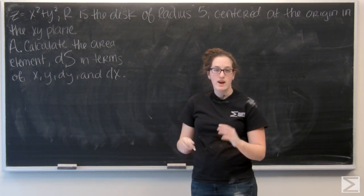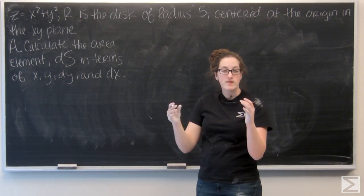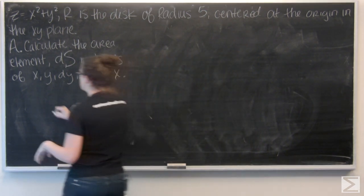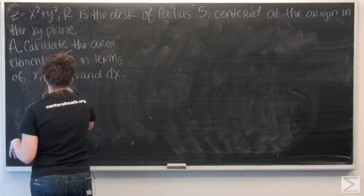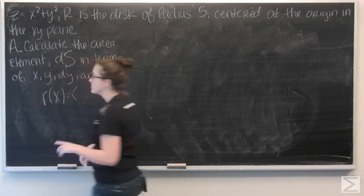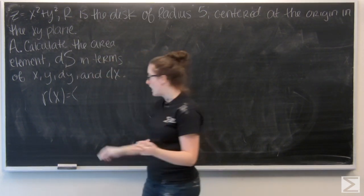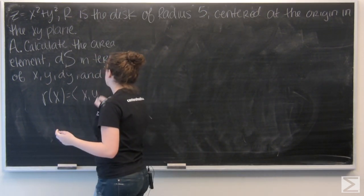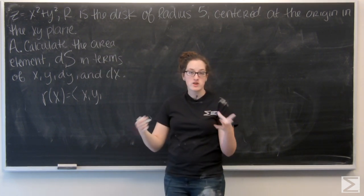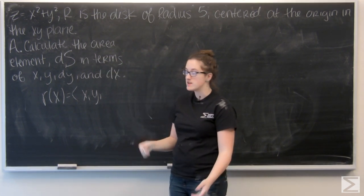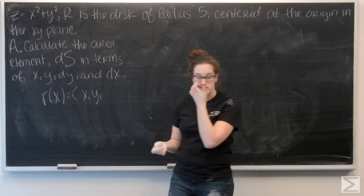So let's remember how we calculate this area element. First, I want to start by writing r of x y, which is going to be a vector. And the three components are going to be x, y, and whatever the function of x and y is that makes them z. So here it's x squared plus y squared.